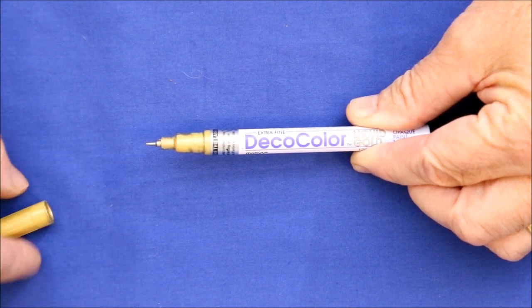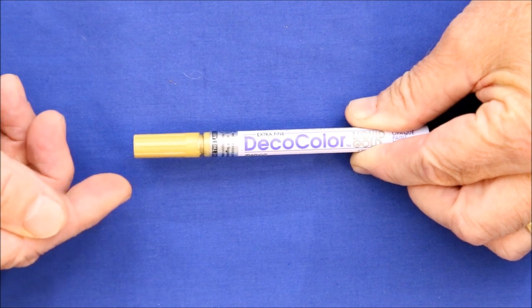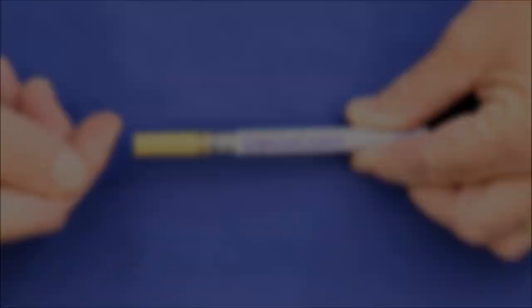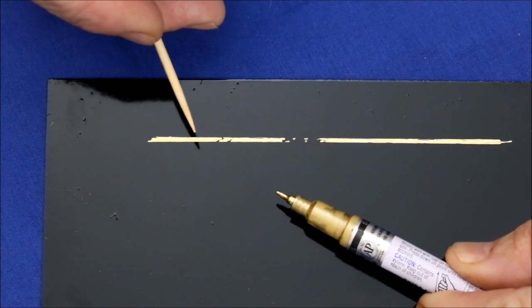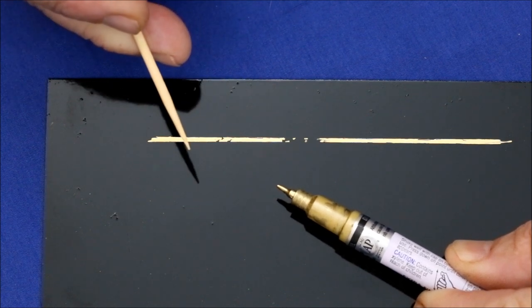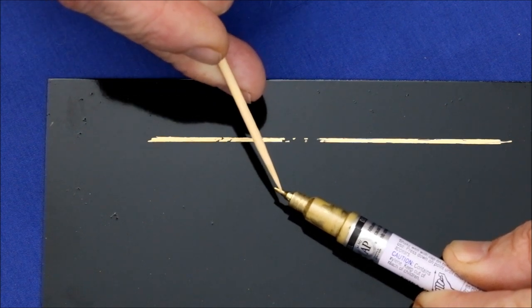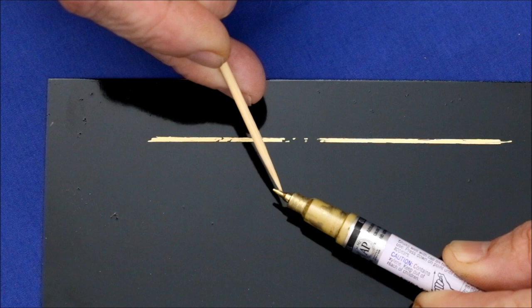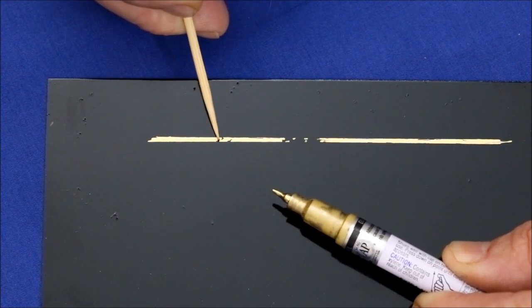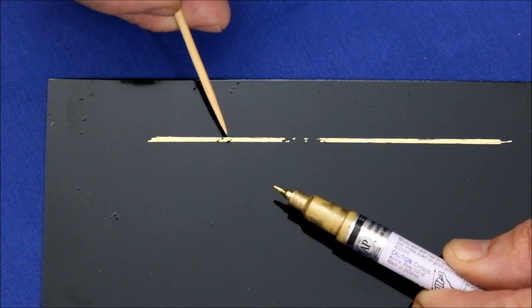To get around these problems, I seldom use the paint pen directly, or if I do, I use masking tape. For small touch-ups, I use a toothpick or bamboo skewer to pick up a small amount of paint off of the pen and then apply it directly to the machine. Work quickly because the paint dries fast.